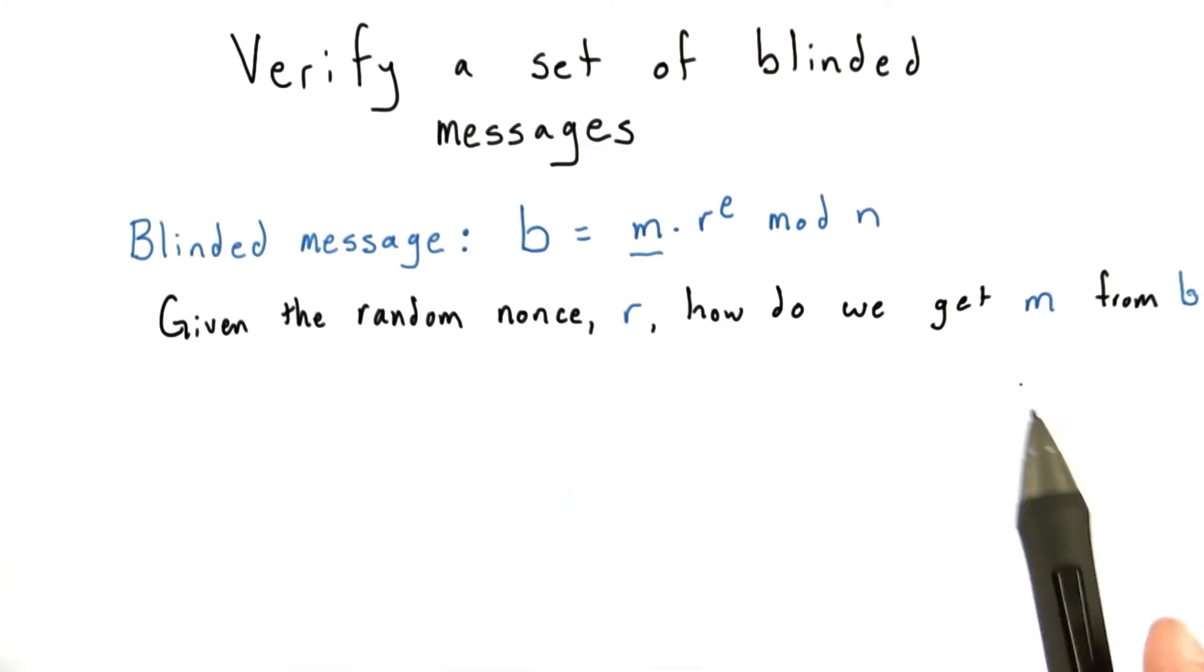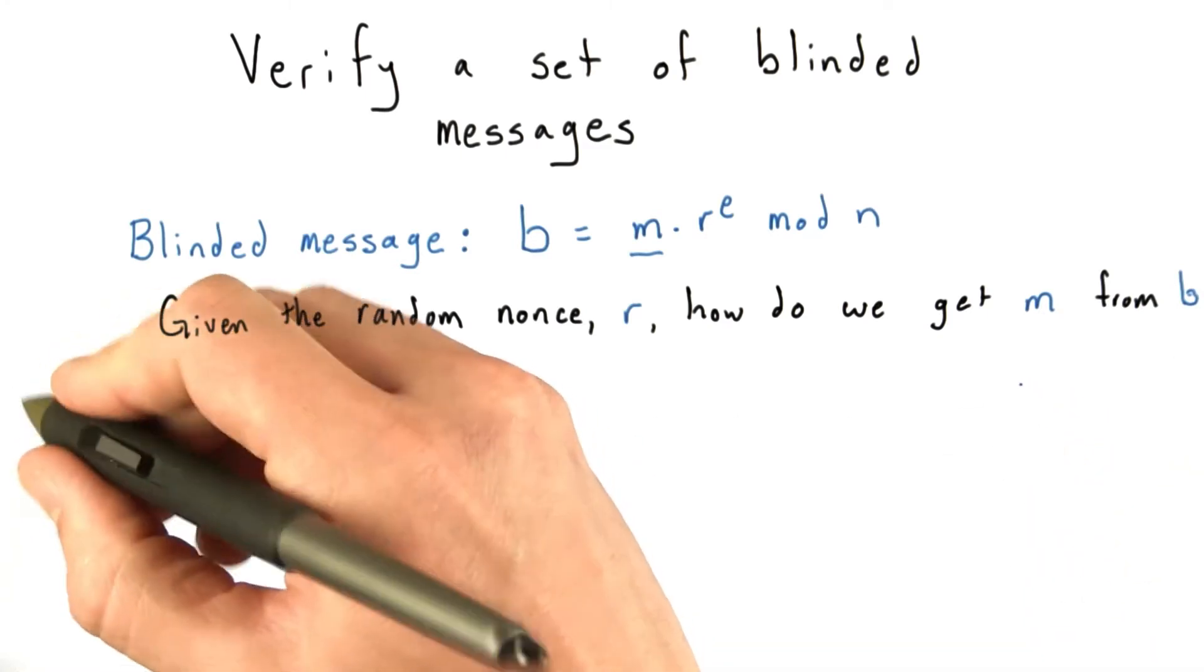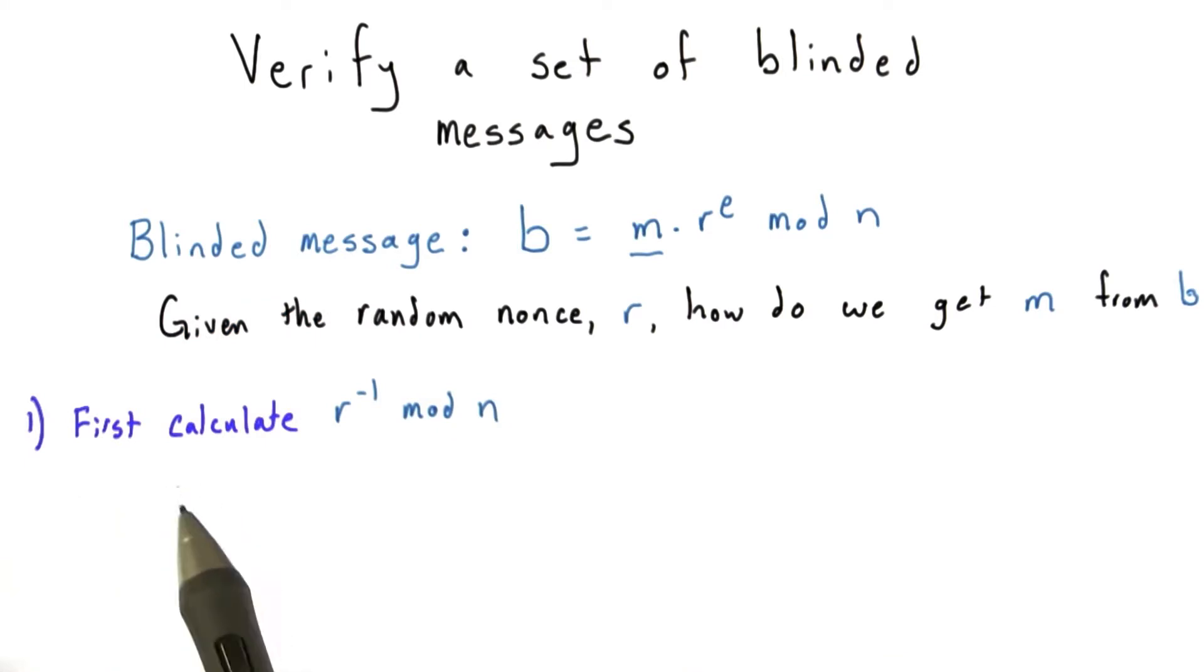There are two very similar ways to accomplish this, and I'll talk about both of them. In the first way, the first step is to calculate the inverse of r mod n. I'd like to talk for a second about what this means and how to calculate it.